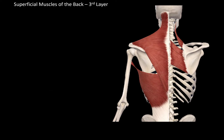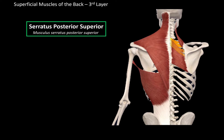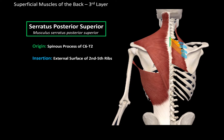If you remove those three muscles, we get to the third and last layer, which consists of the serratus muscles. First, we have the serratus posterior superior, which is here, underneath the rhomboids. It originates from the spinous processes of C6 to T2, and inserts at the external surface of the second to the fifth rib. Its function is to elevate the ribs to help with inspiration by expanding the thoracic cavity so that air can come in.